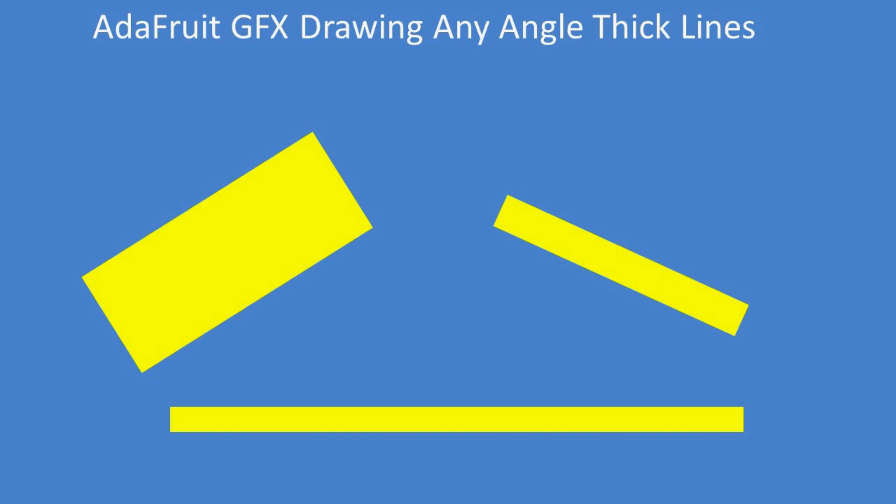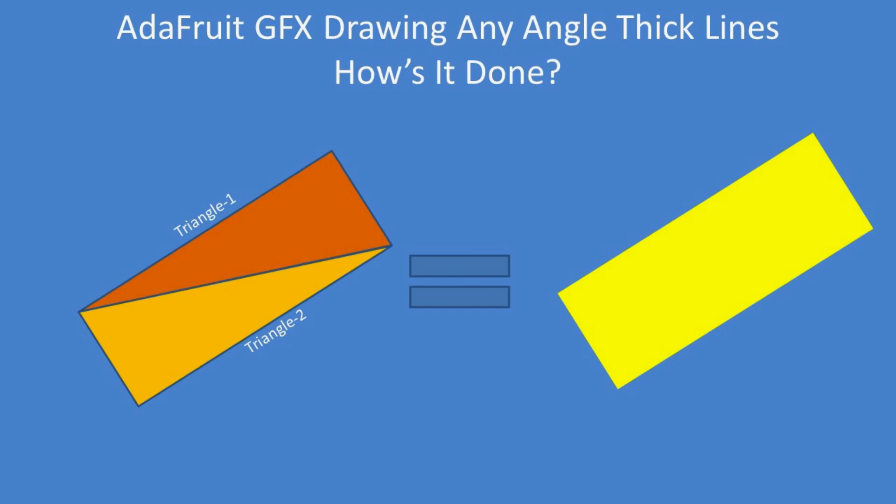How's it done? Well, by drawing two triangles you can simulate a rectangle and it's as simple as that. You can do that because there is a triangle function.